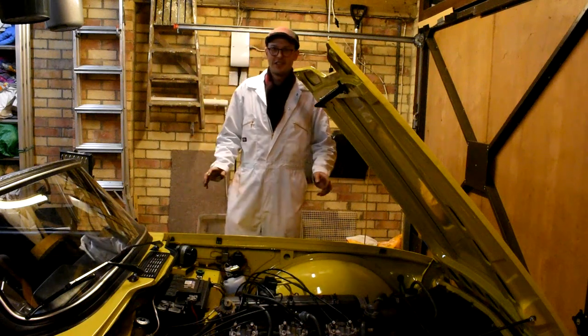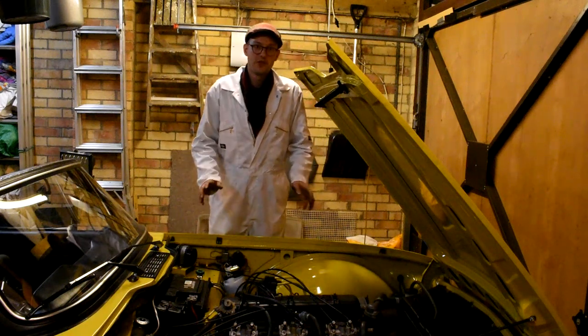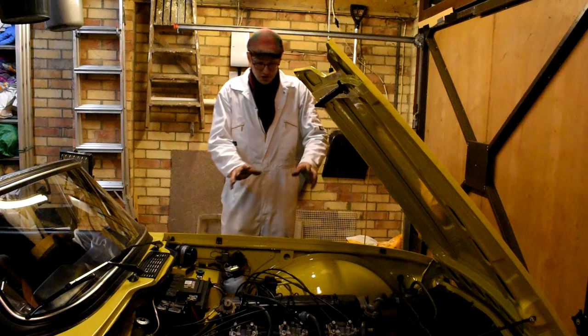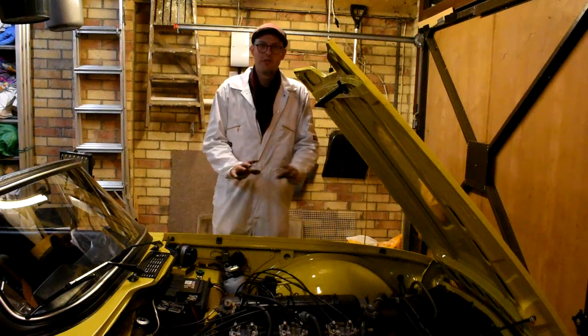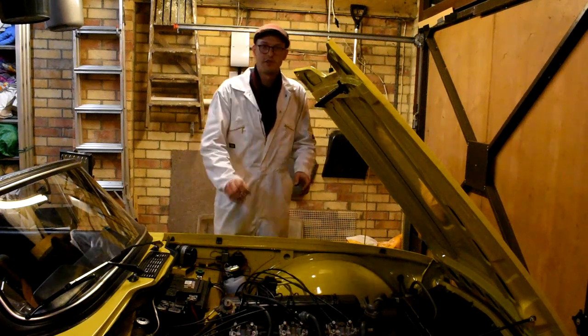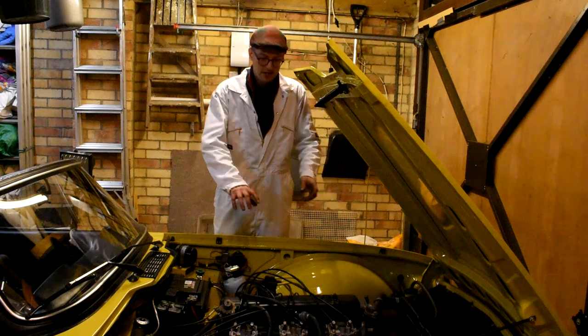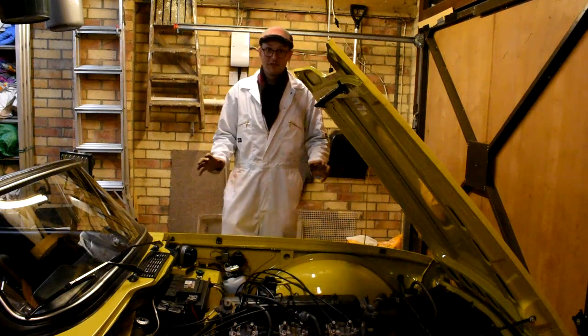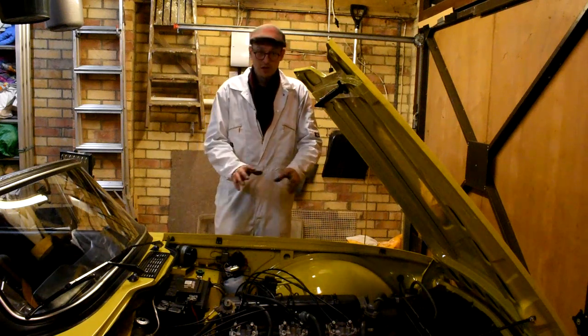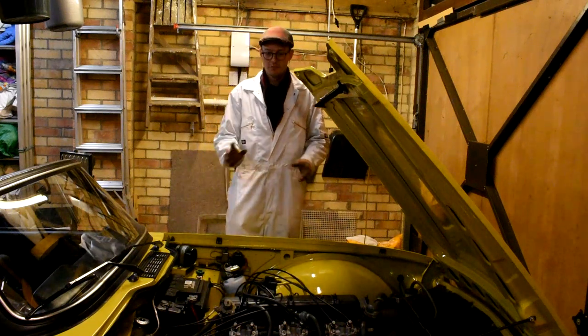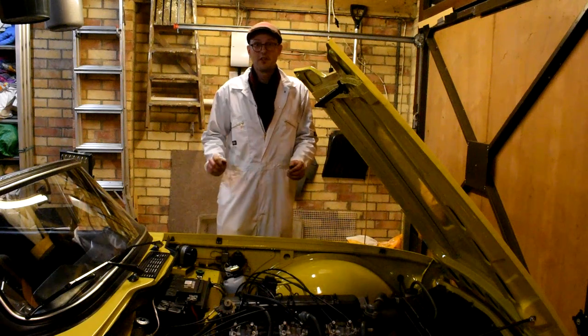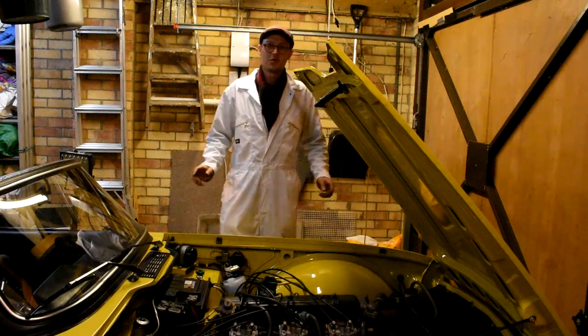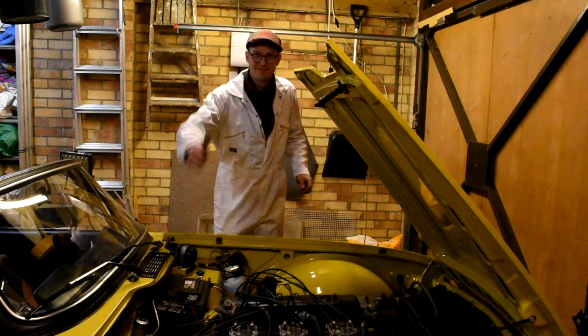So there we are, John's Triumph TR6 converted from points to electronic ignition. The ignition timing was a little bit out but that was no big deal because it was just a matter of loosening off the distributor and rechecking the timing and setting it up right to 11 degrees before top dead center. So I hope you found this video useful if you're converting your car to a Lumination electronic ignition system with Magnetronix. But as always guys, don't forget to like, comment and subscribe and I'll see you guys in the next video. Take care.